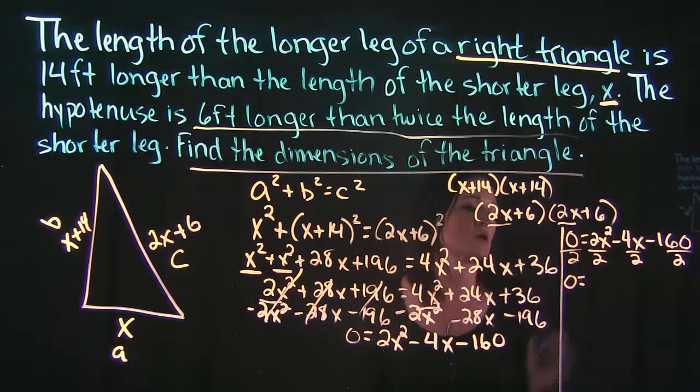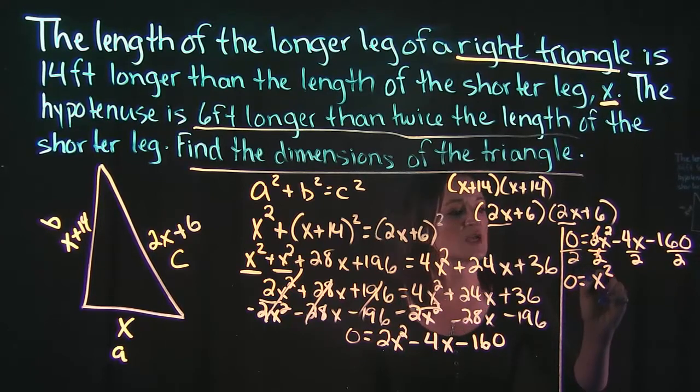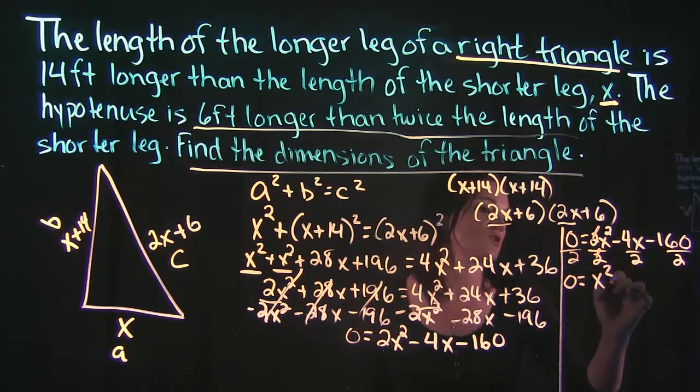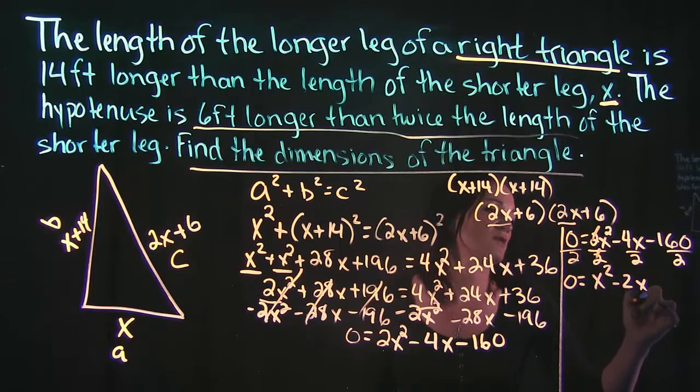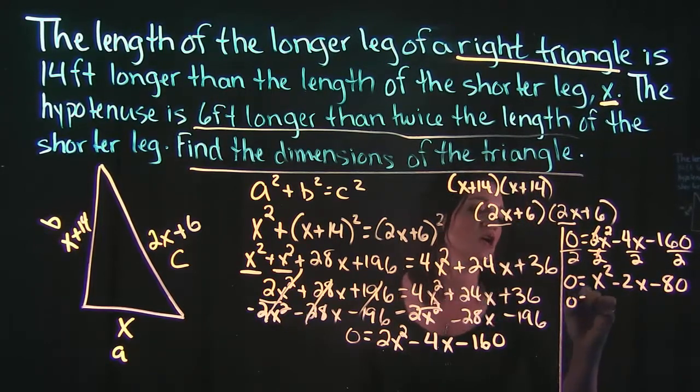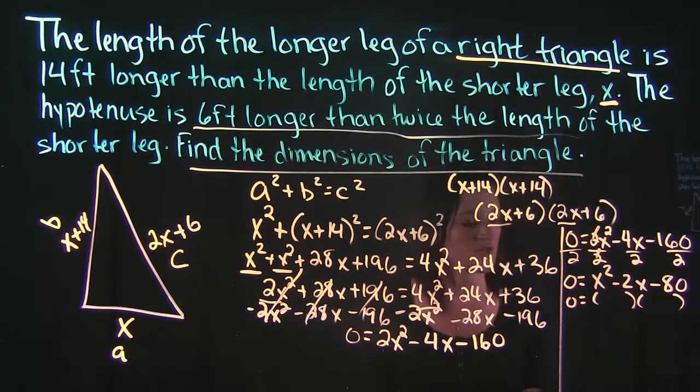Which is going to give us 0 is equal to, 2 over 2 cancels leaving us with x squared, 4 over 2 gives us negative 2 there, and the negative 160 divided by 2 gives us minus 80. So that we can go ahead and factor this.